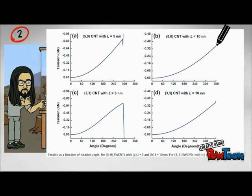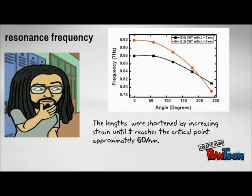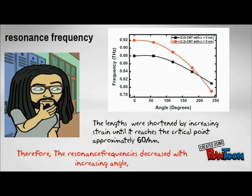Taking into consideration the resonance frequency as a function of rotation angle, as the length of the single-wall carbon nanotubes were shortened by increasing shear strain until it reaches a critical point of 60 degrees per nanometer, therefore all simulations after this were conducted with a rotation angle less than 240 degrees.